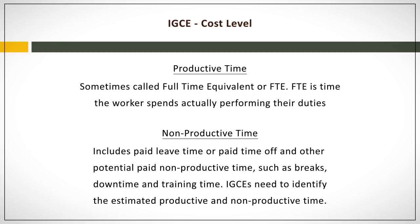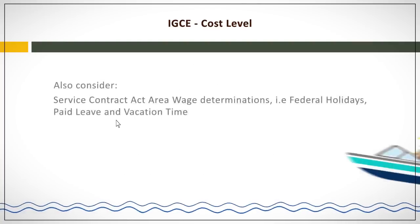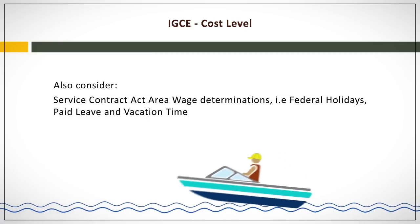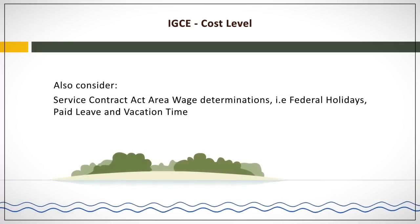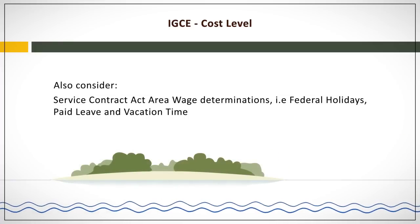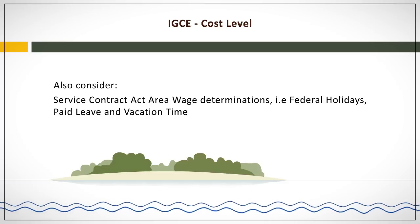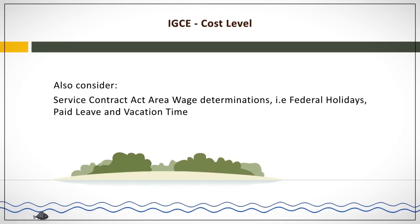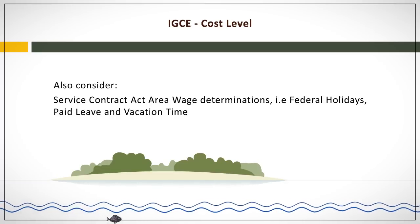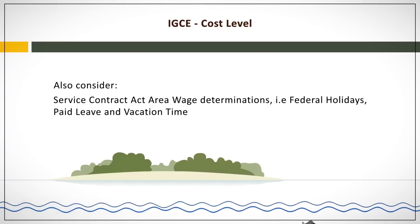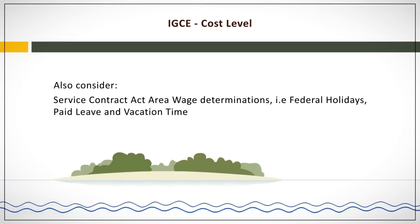IGCEs need to identify the estimated productive and non-productive time. In addition, the requiring activity should also consider Service Contract Act area wage determinations, which usually mandate a minimum amount of time for holidays — normally 10 federal holidays — and vacation and personal leave.